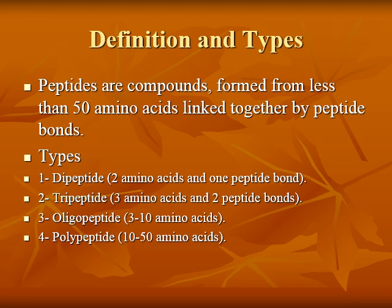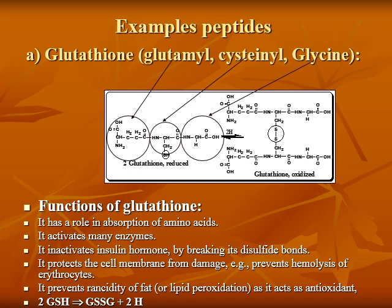Peptides are composed of fewer than 50 amino acids linked together by peptide bonds. Types of peptides: dipeptides consist of 2 amino acids with 1 peptide bond; tripeptides consist of 3 amino acids and 2 peptide bonds; oligopeptides consist of 3 to 10 amino acids; polypeptides consist of 10 to 50 amino acids. Glutathione is an example composed of glutamic acid and glycine.